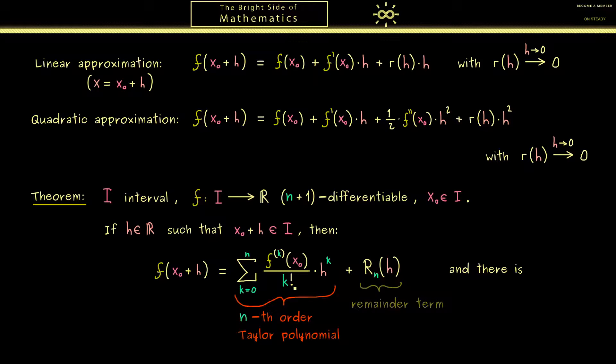Now the whole claim here is not finished yet. Because of course as before we can say something about the remainder term here. Indeed the remainder term gets better when we have one derivative more than we need for the Taylor polynomial.